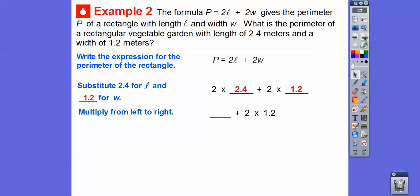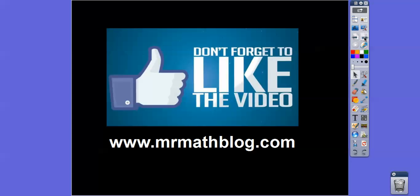And now we multiply from left to right. So we're going to multiply these two numbers first. So 2 times 2.4 is 4.8. And then now we have to do 2 times 1.2. We have to multiply before we can add. So we're going to go ahead and multiply. 2 times 1.2 is 2.4. So now we can go ahead and add 4.8 plus 2.4 gives us 7.2. All right, so the perimeter of the vegetable garden is going to be 7.2 meters right there. All right you guys, hope that makes sense and take care.